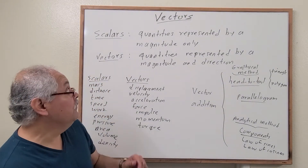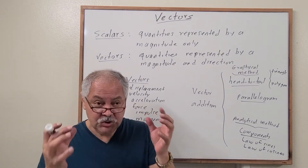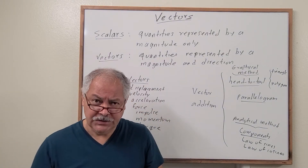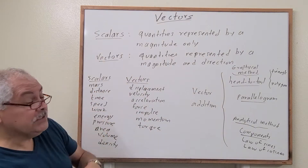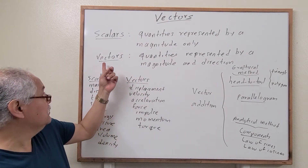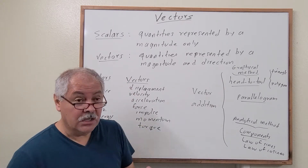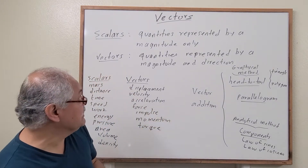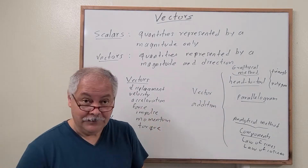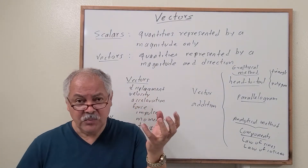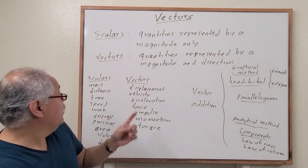Now let's go to vectors. In physics we have two groups of quantities. One group is called scalars and the other group is called vectors. Scalars are just quantities represented by a magnitude — a number and a unit. Vectors are represented by magnitude and direction.